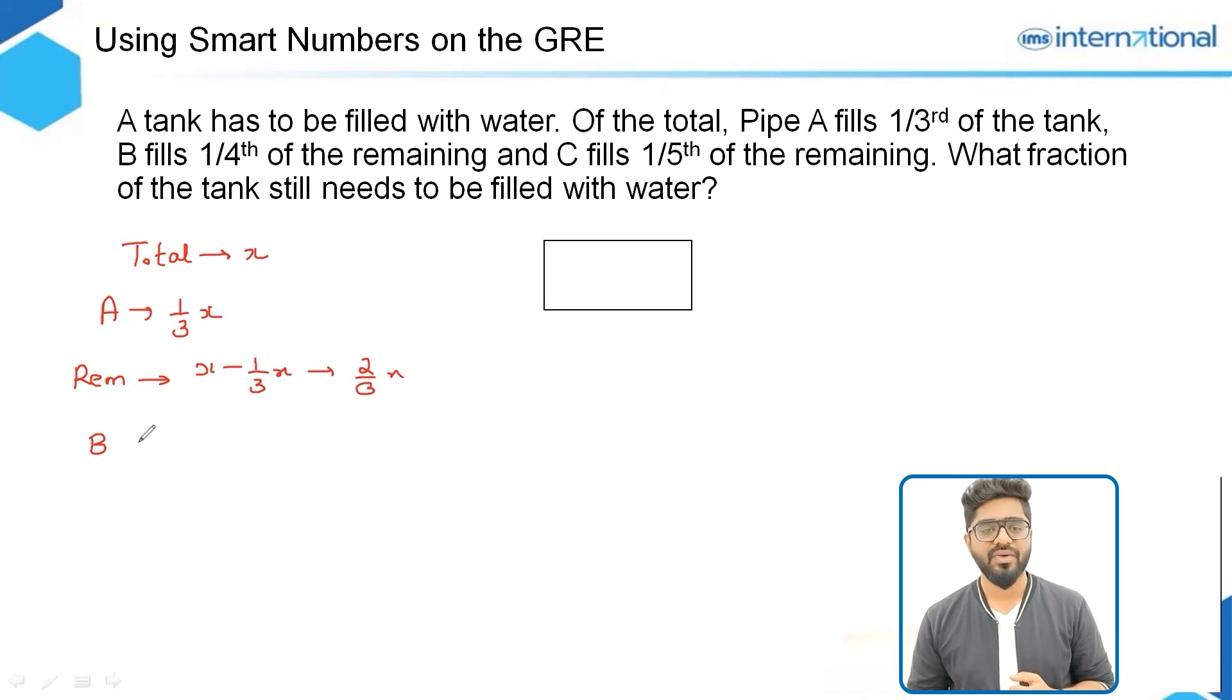So B fills one fourth of two thirds of x. One fourth of two thirds of x equals 2/12x. In its simplest form this can be written as one sixth of x.